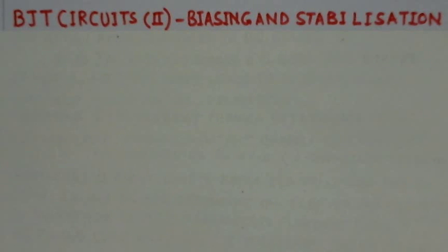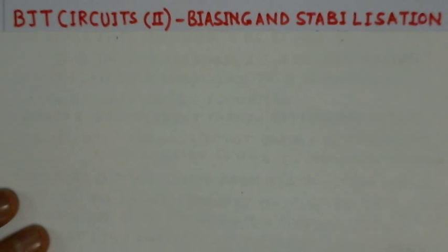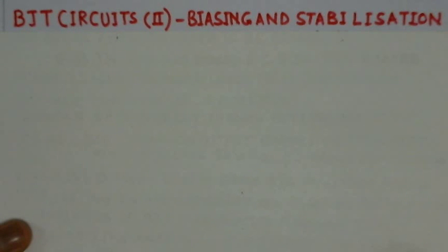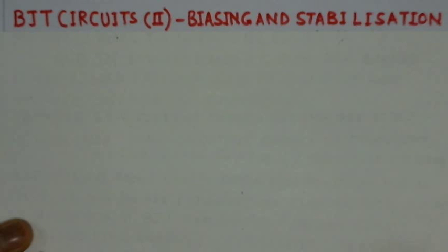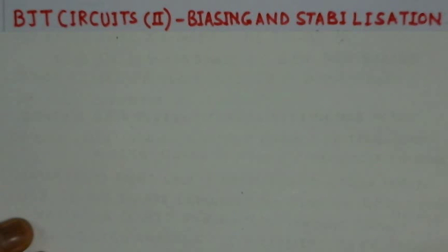This video is Part 2 of BJT circuits and it is on bias and stabilization. By biasing the BJT, we set a suitable voltage and current. When biasing, we set midpoint biasing — that is, the Q point is set on the center of the load line. Maintaining the Q point stable independent of temperature variations and transfer parameters is called stabilization. The most important bias circuit is the potential divider bias circuit, which is independent of beta.